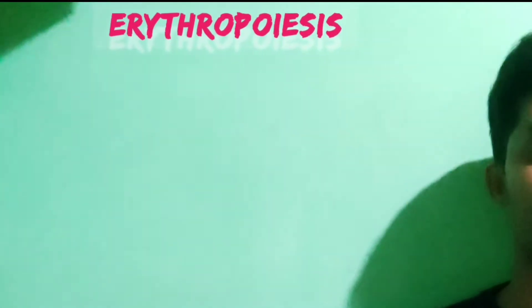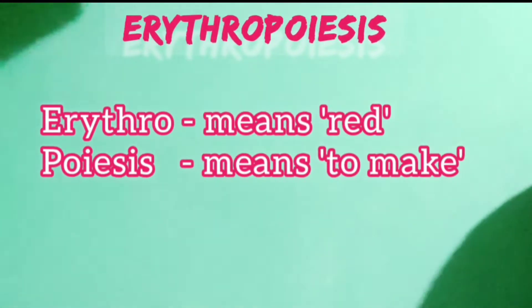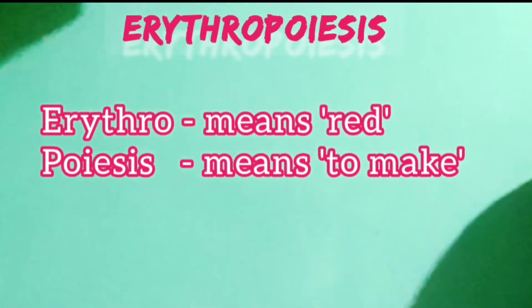First, what does the word erythropoiesis mean? Erythropoiesis is derived from two Greek words: one is 'erythro,' which means red, and another is 'poiesis,' which means making.